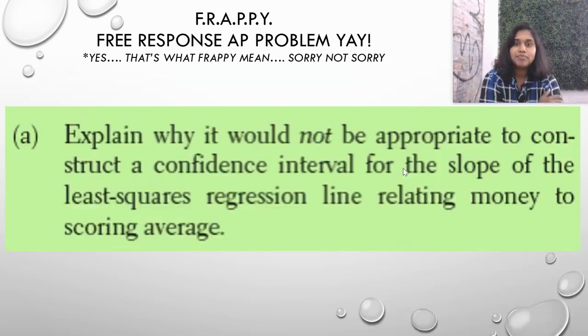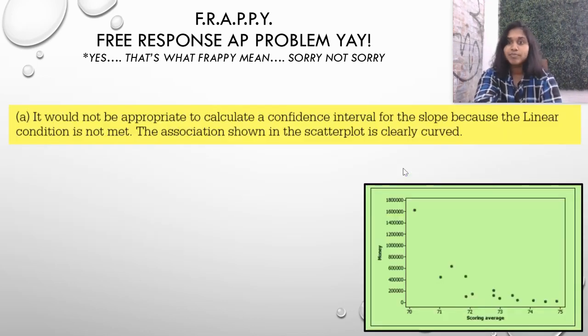So, let's jump into question A. Explain why it would not be appropriate to construct a confidence interval for the slope of the least squares regression line relating money to scoring average. Well, to answer that question, I need the original scatterplot. There's the answer, but I'm going to go ahead and show it to you.